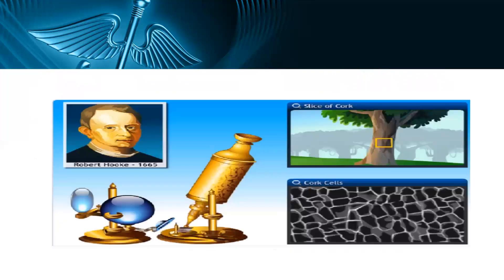This is the pictorial view of Robert Hooke in 1665, which shows his compound microscope made by him, and his renowned experiment in which a slice of cork was taken and the cork cells appeared in this form under his microscope.